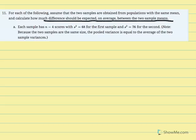Part A: each sample has equal size of 4, with variance of 68 for the first sample and variance of 76 for the second. Note that because the two samples are the same size, the pooled variance equals the average of the two sample variances. Since variance was given instead of sum of squared deviations, I'll use the alternate equation to calculate pooled variance, because ultimately we need the estimated standard error of the mean difference.